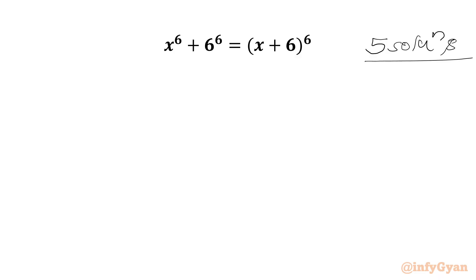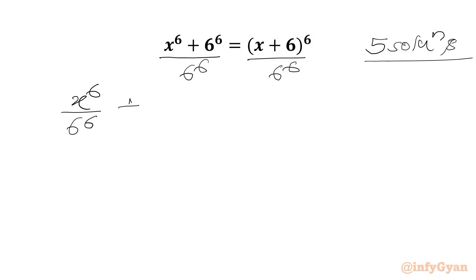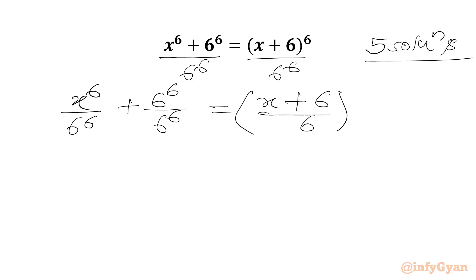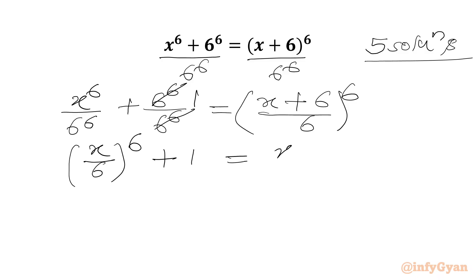Let us get started by dividing 6 power 6 on both sides. On the LHS we can write x power 6 over 6 power 6 plus 6 power 6 over 6 power 6. On the RHS we can write x plus 6 over 6 whole power 6. Using exponent law we can write x over 6 whole power 6, and 6 power 6 over 6 power 6 gives 1. Then we can write x over 6 plus 1 whole power 6.